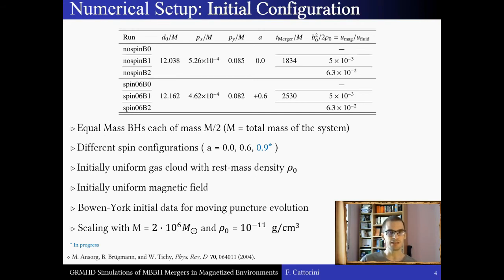The binaries begin evolving at a separation of 12M in code units, in an initially uniform homogeneous gas cloud threaded by an initially uniform magnetic field, everywhere directed along the orbital axis. And my initial data are of the Bowen-York type, which is commonly used for the moving puncture evolution. And here, in this table, I show the initial data for the non-spinning and the spin 0.6 runs.